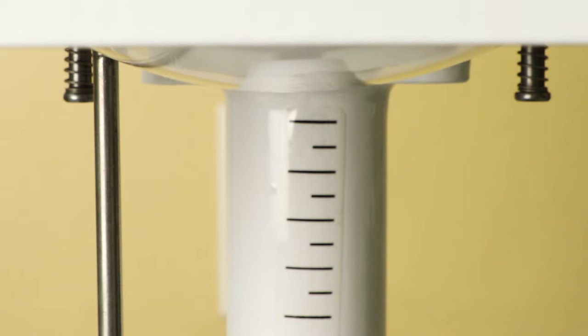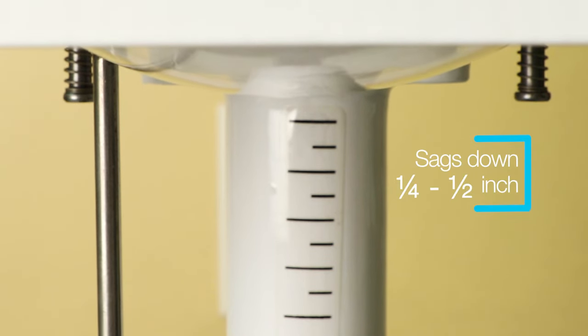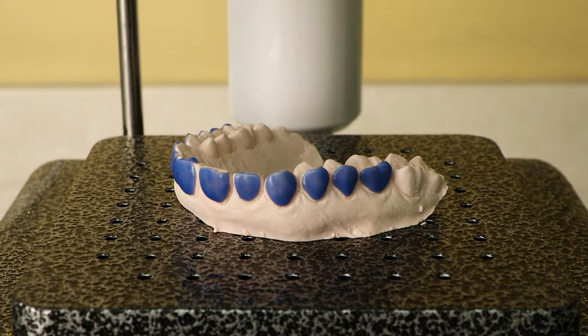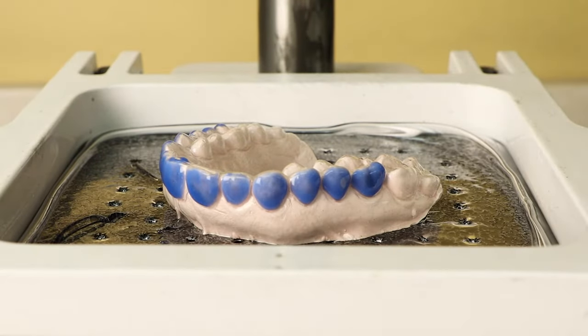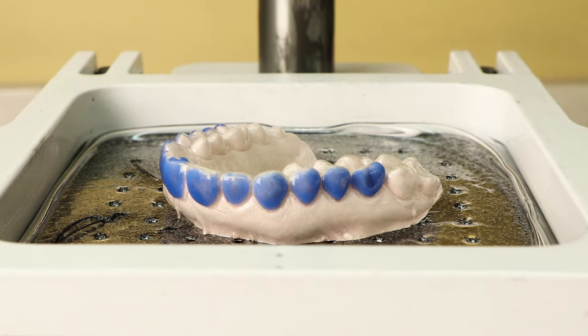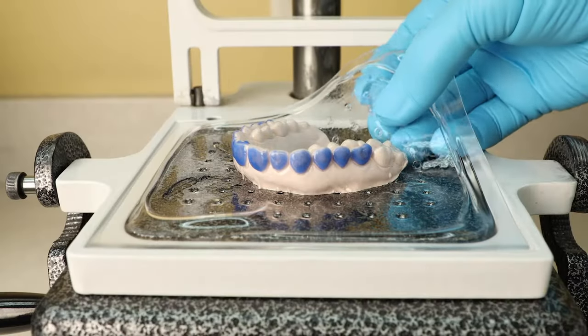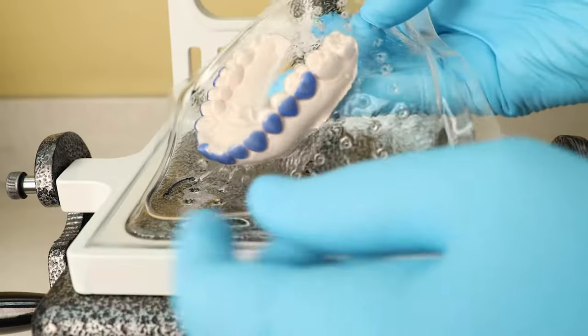With vacuum former, heat the tray material until it sags down approximately one quarter to one half inch. Activate the vacuum and adapt the softened plastic onto the model. To avoid distortion, cool the tray material completely before removing from the model.